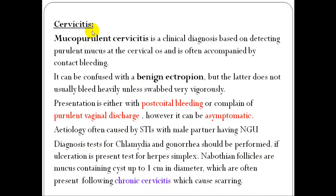Cervicitis is another infection — it is an ascending infection and a sequela of PID. Mucopurulent cervicitis is a clinical diagnosis based on detection of purulent mucus on the cervical os. It may sometimes be confused with normal ectropion, which is a benign and non-infectious condition. Post-coital bleeding or a combination of purulent vaginal discharge and post-coital bleeding may be a lead to diagnosis.